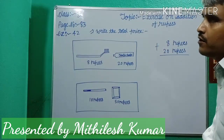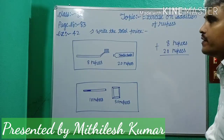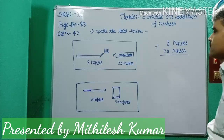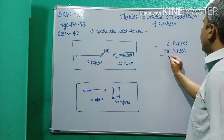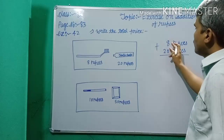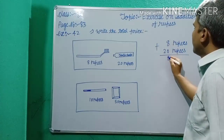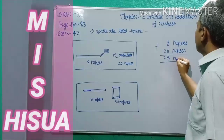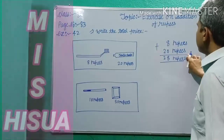When you add, you find out the total amount of the articles. You add the single-digit numbers: 8 plus 0 is 8, then 2 plus 0 is 2, so the total is 28 rupees.